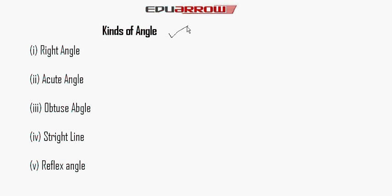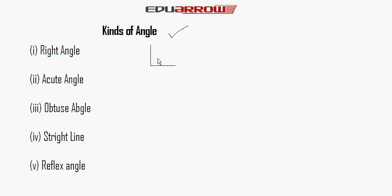A right angle is an angle of 90 degrees. In other words, an angle whose measure is 90 degrees is called a right angle.